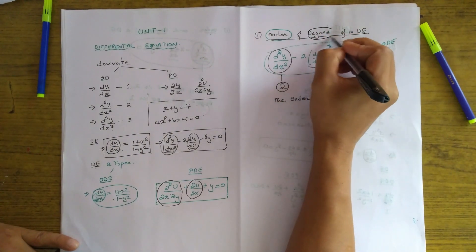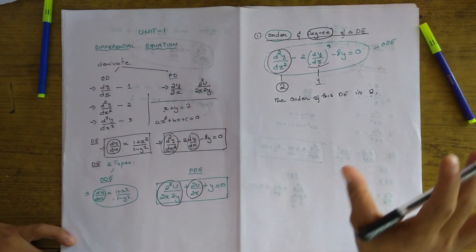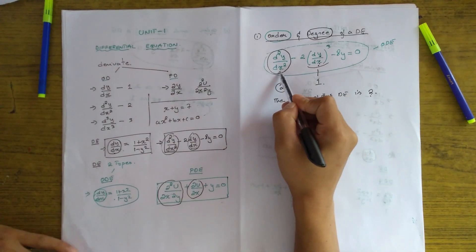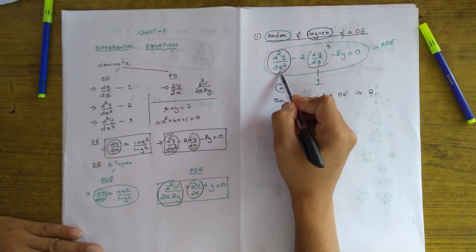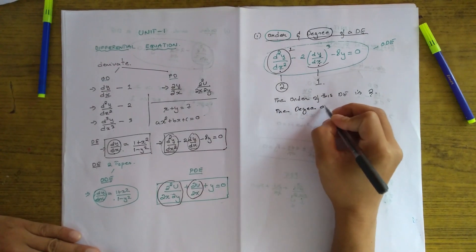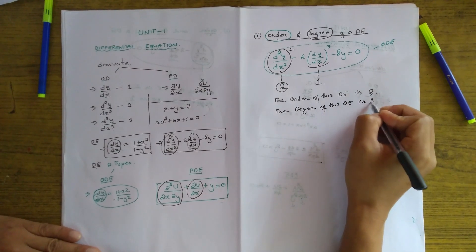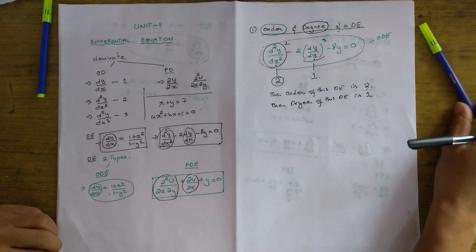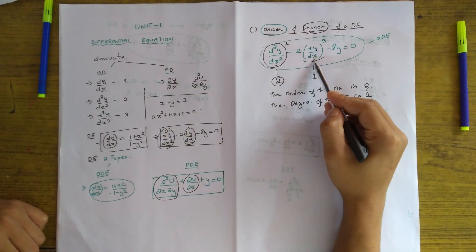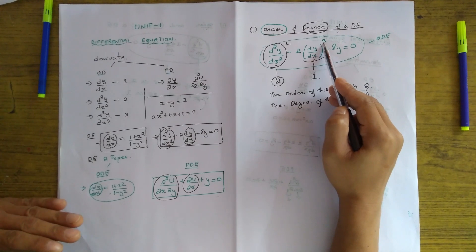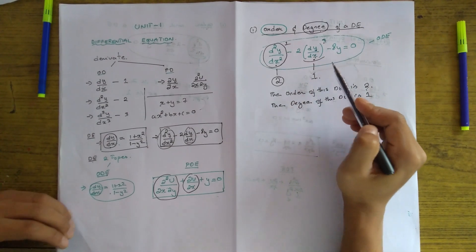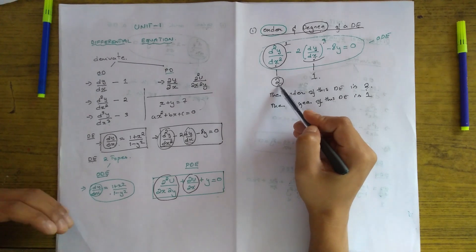The degree refers to the power of the highest-order derivative. In this equation the highest-order derivative is d²y/dx², and its power is 1. So the degree of this differential equation is 1. Do not be confused: even if a lower-order derivative has a higher power — for example, power 3 — we are not taking the power of the lowest-order derivative; we take the power of the highest-order derivative. Here the highest order is 2 and its power is 1, so the degree is 1.